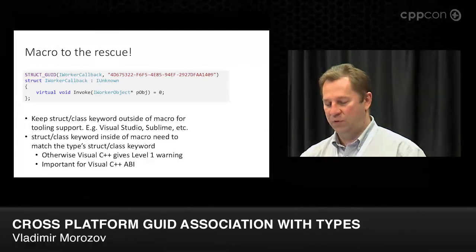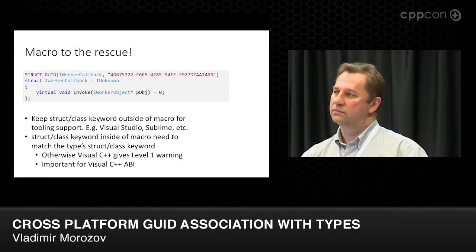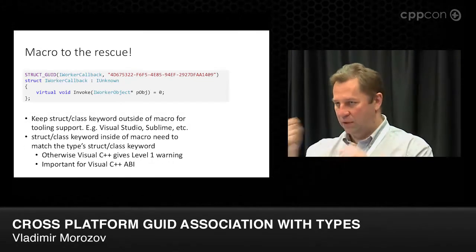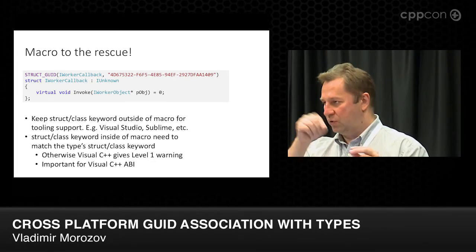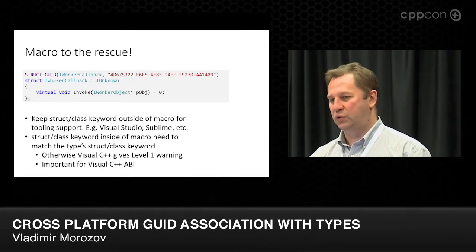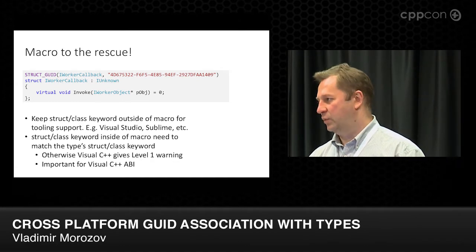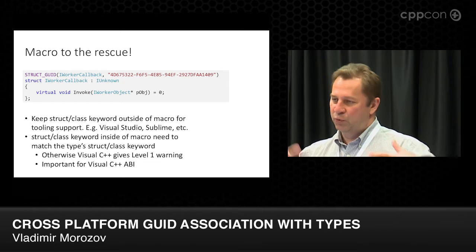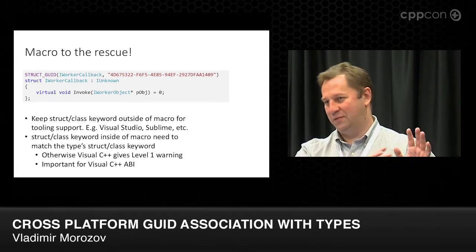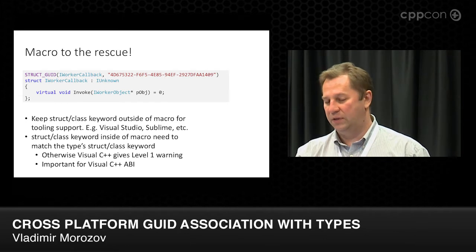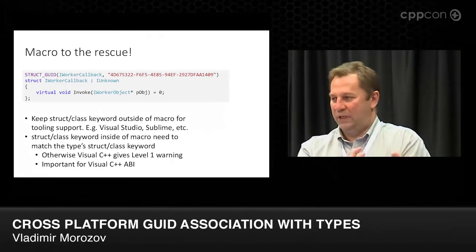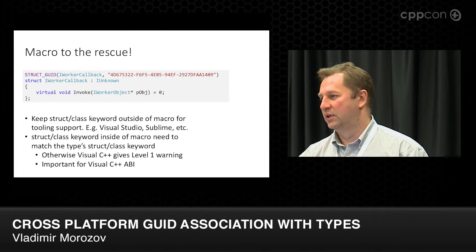One approach people sometimes take is having the macro hide the struct or class inside of it. We found that's not a good idea, because you have a bunch of different tools — like Visual Studio, Sublime, or inside Microsoft we have special research tools to index all your source code — and if you put your class name inside a macro, you can't find your class. You can't simply search for 'struct foo'. So we want the explicit struct or class keyword to be separated, so it can be easily found without any hacks to your indexing tools.